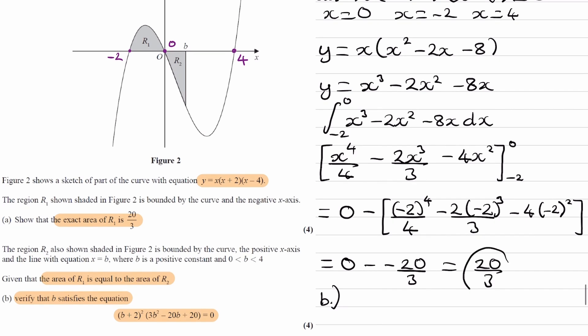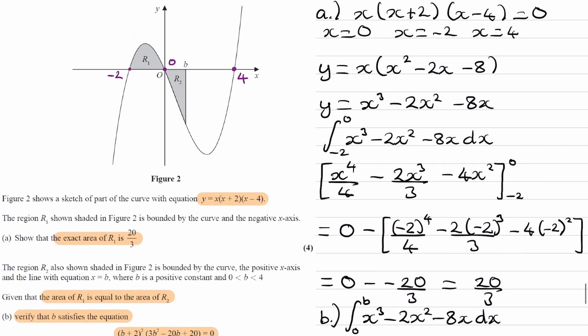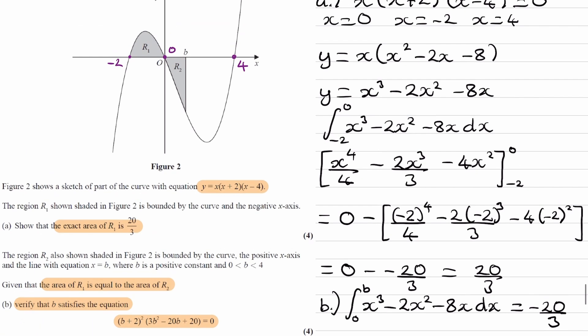We know that the area of r1 is equal to 20 over 3 from the previous question. The area of r2 we can get by integrating the exact same curve: x cubed minus 2x squared minus 8x, this time between limits of 0 and b, and that should be equal to 20 over 3. But because this area is beneath the x-axis, our answer for the integral will be negative. So actually this will be equal to minus 20 over 3. They have the same area, but when you integrate beneath the x-axis it gives you a negative value.